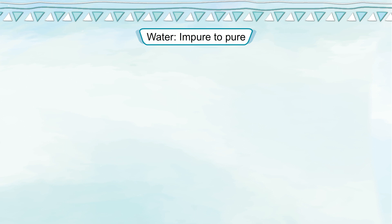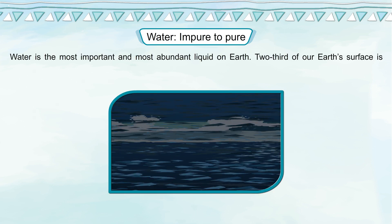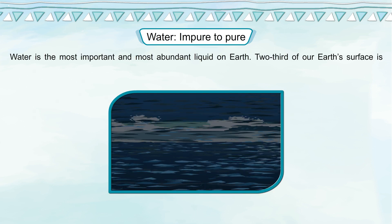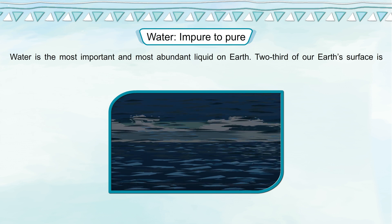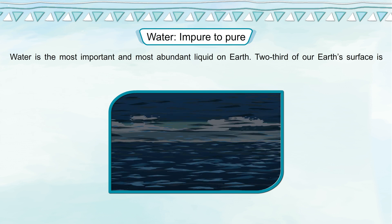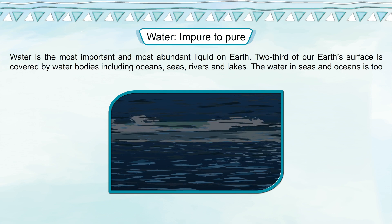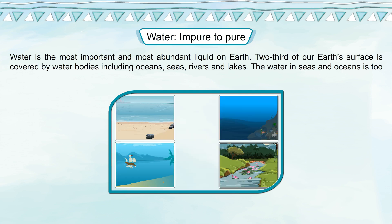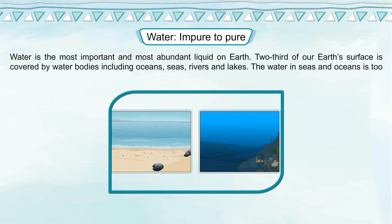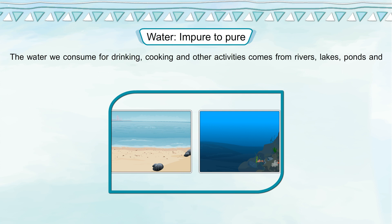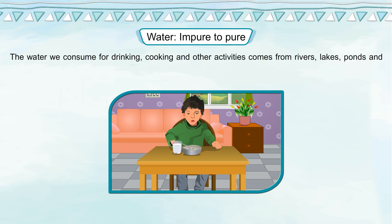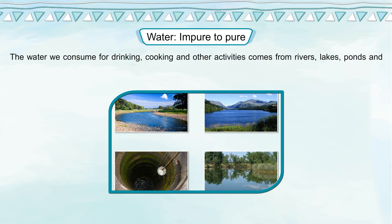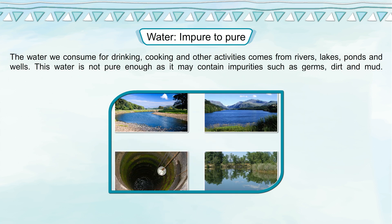Water is the most important and most abundant liquid on earth. Two-thirds of our earth's surface is covered by water bodies, including oceans, seas, rivers and lakes. The water in seas and oceans is too salty for our consumption. The water we consume for drinking, cooking and other activities comes from rivers, lakes, ponds and hills.